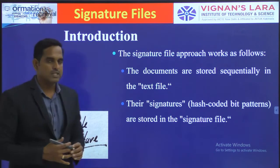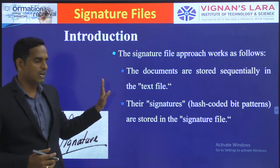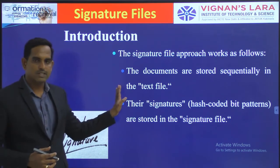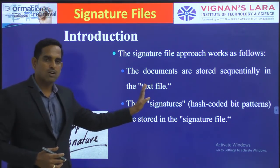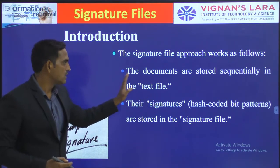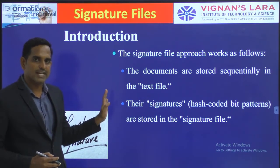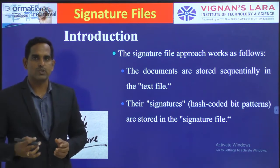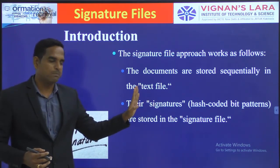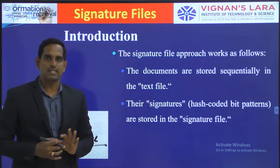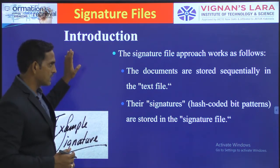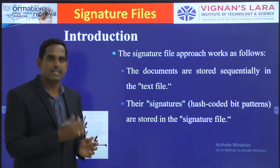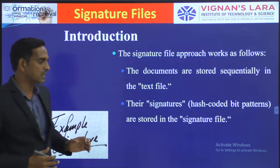The first thing we have learned is what is a signature file. Documents are stored in a continuous sequential file called a text file, and their signatures — created using hash coded bit patterns — are stored in the signature file. We store the signatures of each and every term encountered in the file.